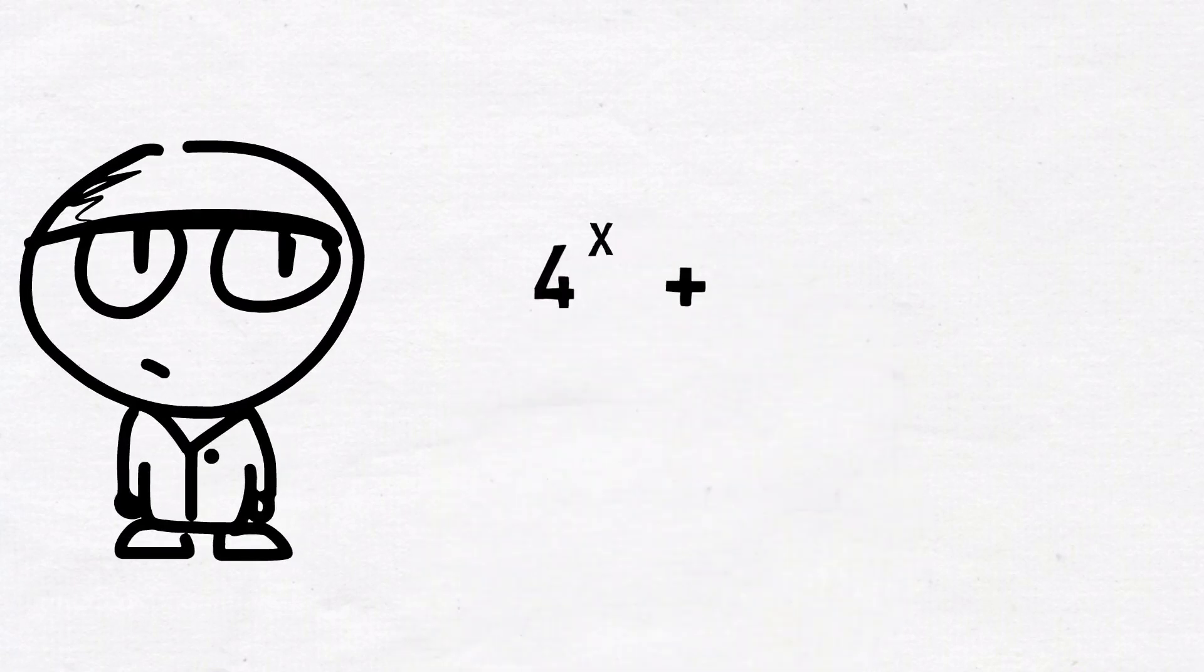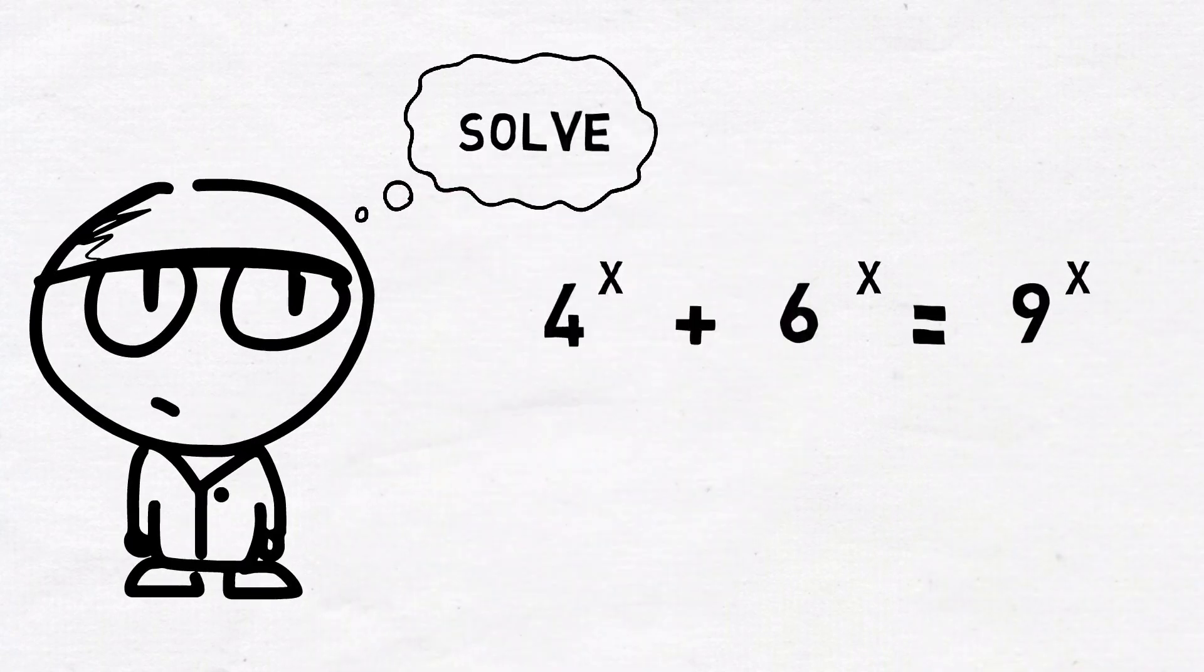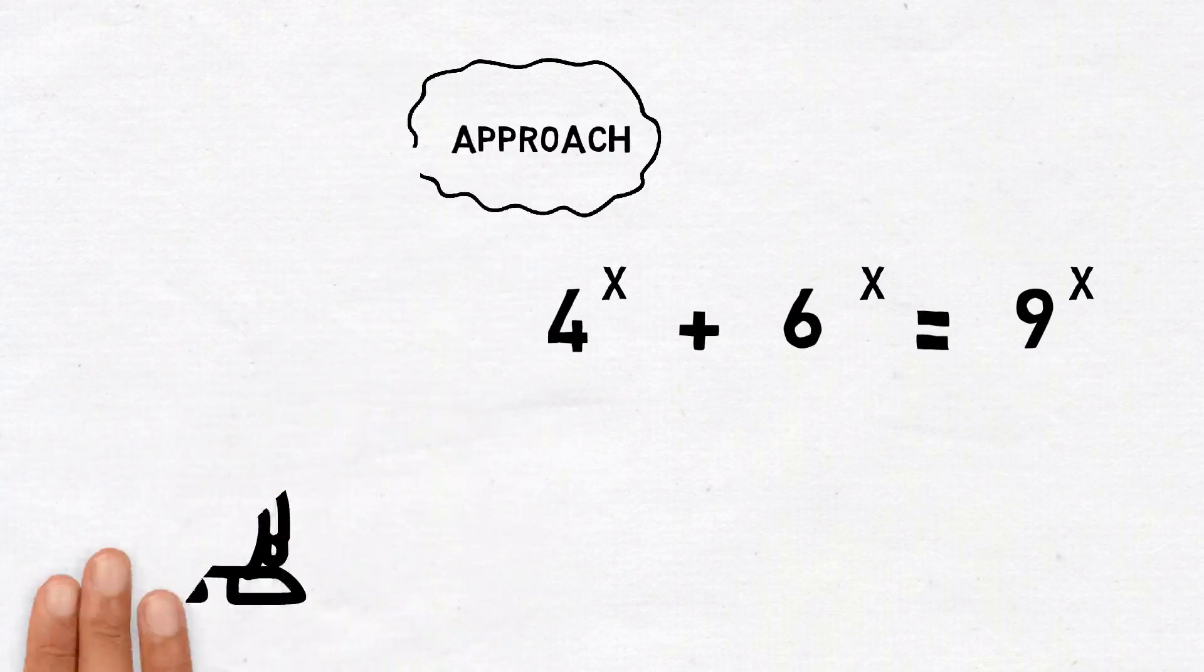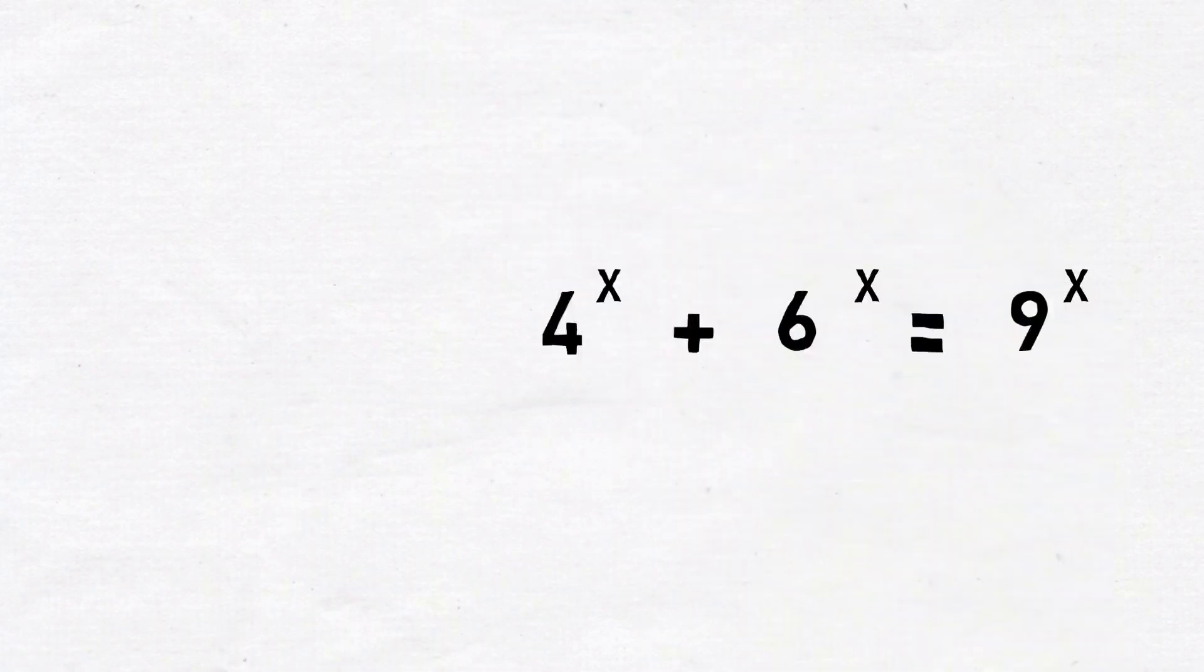4 to the power x plus 6 to the power x is equal to 9 to the power x. Solve for x. Please pause the video and solve. If you do not wish to solve the problem, just write down your approach or what thoughts are running through your mind. I encourage you to do so.